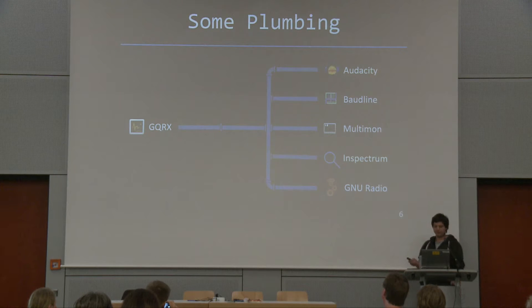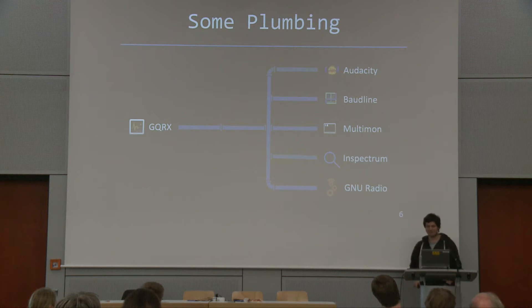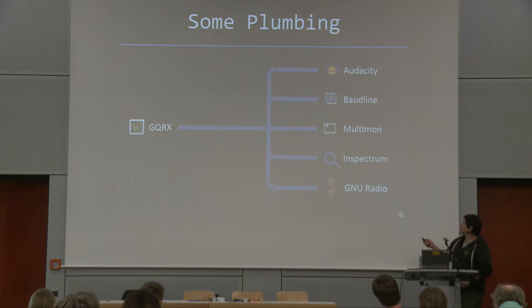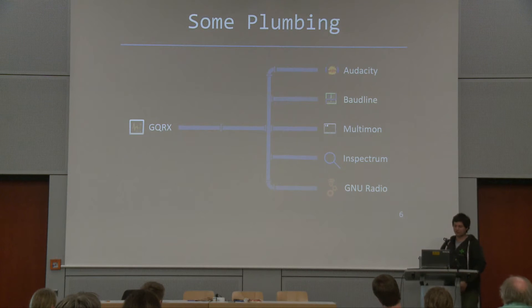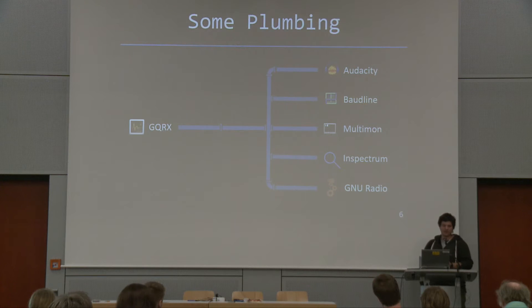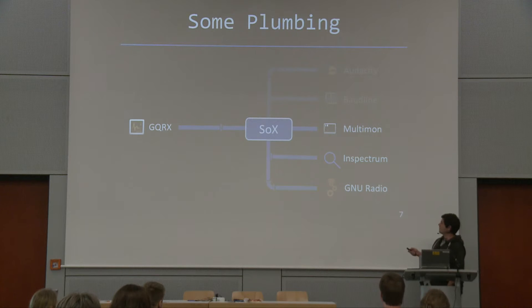Here's an overview of some of the programs I used. Audacity and BordLine are for offline signal processing — hopefully we can declare them obsolete now that InSpectrum exists and is open source. Multimon is a tool you might already know; it's pretty old and allows you to decode all kinds of digital modes. Then there's GNU Radio, the most advanced option where you can build your own digital receiver. Today I'll focus on these three programs and how to do the plumbing from GQRX to each.